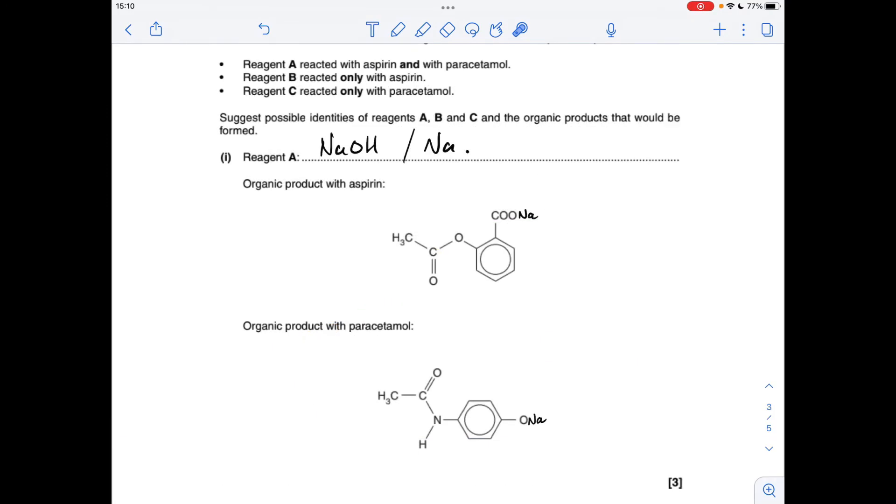Next part. There's several answers you can give here. I've gone for this almost straightforward one. You could either react aspirin and paracetamol with sodium hydroxide or sodium. Both of those would make these two products here. All that's happening is we're replacing the H+ ion of the carboxylic acid group and the hydroxyl group in phenol with a sodium ion, creating a salt.